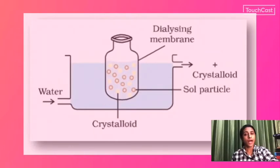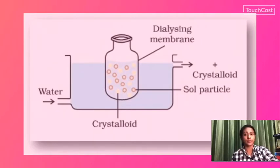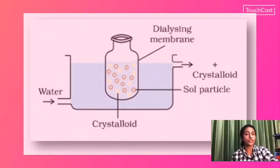The first method of purification is Dialysis. A dialyzing bag is made of a semi-permeable membrane — such as cellophane paper or parchment paper. The colloidal solution is placed inside the dialyzing bag and dipped in fresh water that is circulated continuously. The electrolytes and water-soluble impurities pass through the dialyzing membrane, while the colloidal particles cannot pass. The concentration of electrolytes decreases and the colloidal solution is purified.